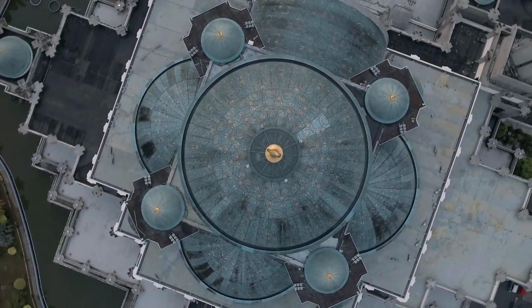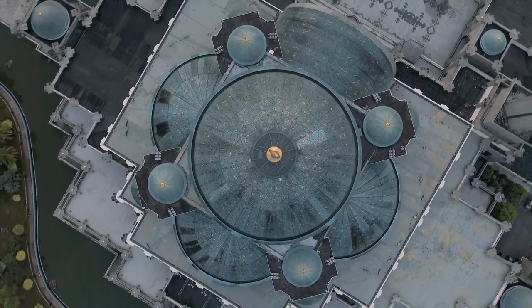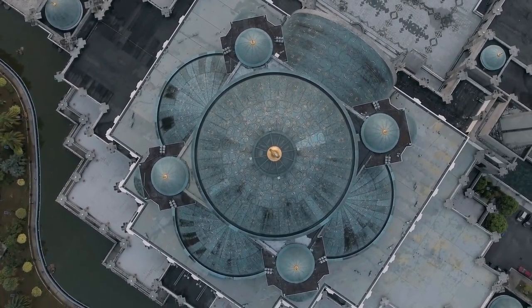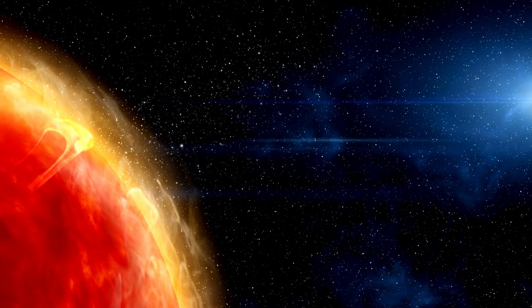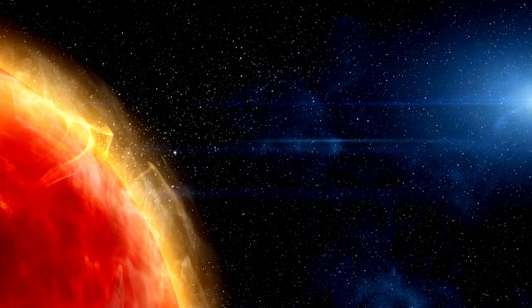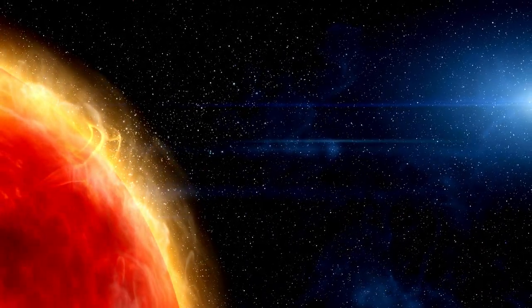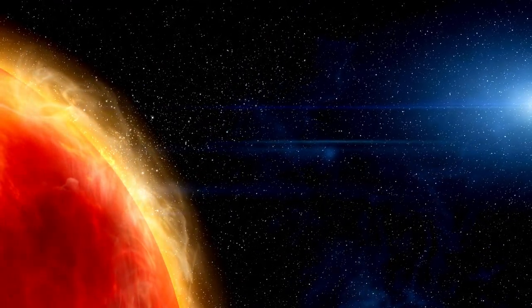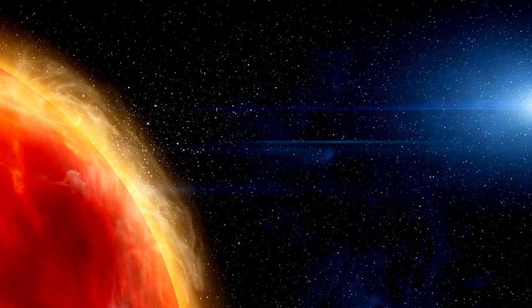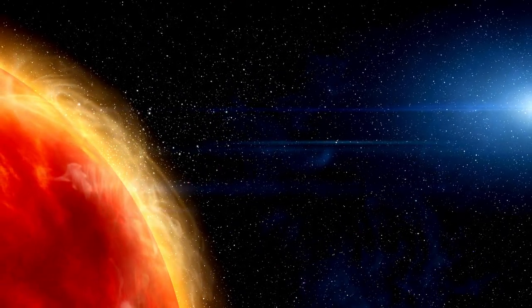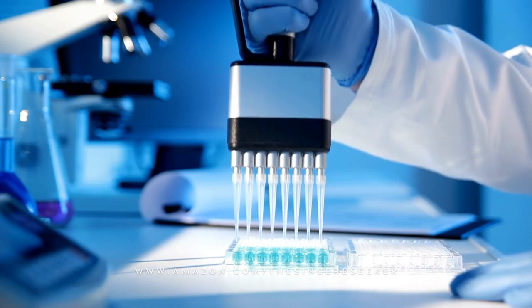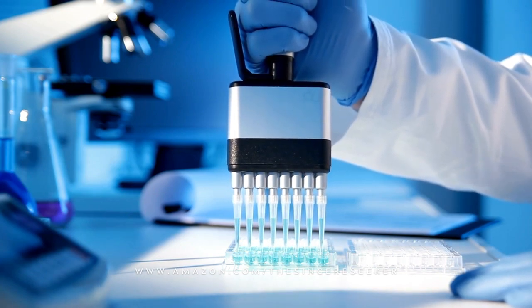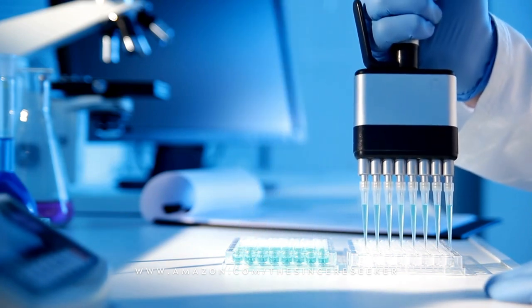And certainly did we create man from an extract of clay. Then we placed him as a sperm drop in a firm lodging. Then we made the sperm drop into a clinging clot, and we made the clot into a lump of flesh. And we made from the lump bones, and we covered the bones with flesh. Then we developed him into another creation. So blessed is Allah, the best of creators. Quran, chapter 23, verses 12-14.